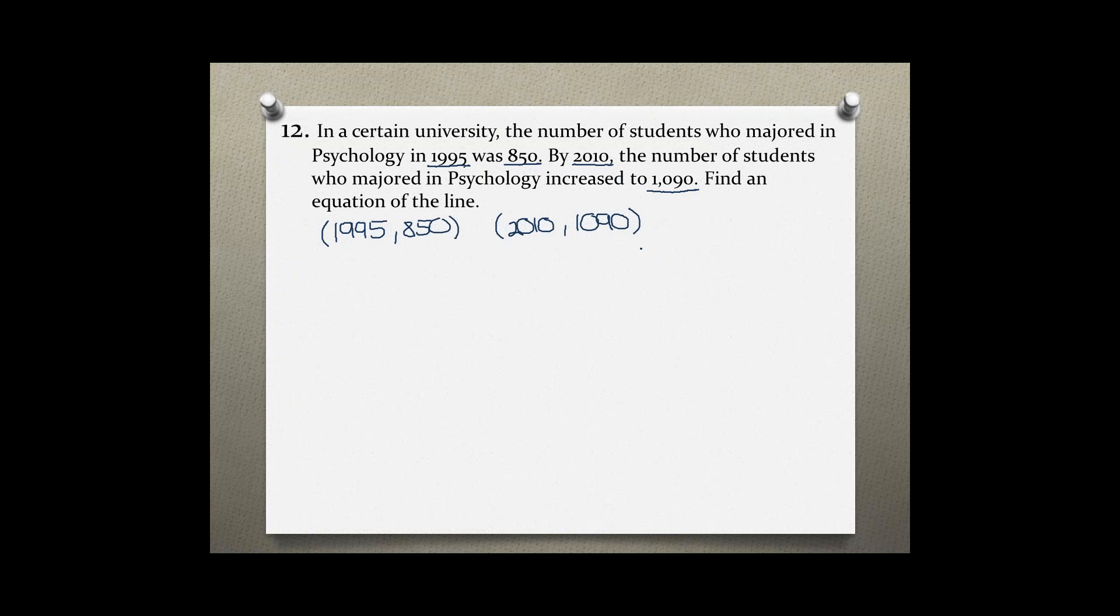The slope formula is m equals y2 minus y1 over x2 minus x1 to find the slope. Then use the slope and one of these points to write an equation of the line.